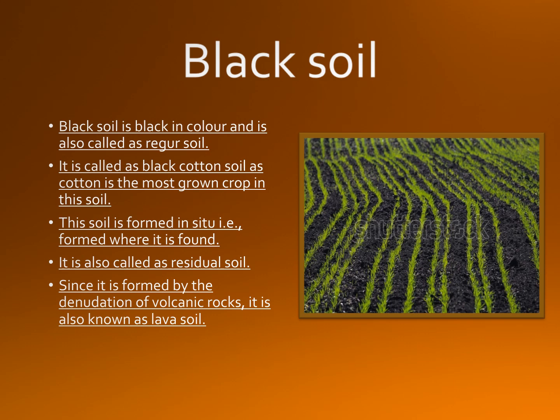It is spread over an area of 5.4 lakh square kilometers, that is around 16.6 percent of the total land area of the country. Have a look at the picture — this is black soil where wheat crops are grown. You can see the seedlings of wheat crops grown in rows. Black soil is a mineral soil which has a black surface horizon.